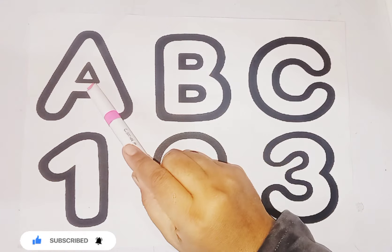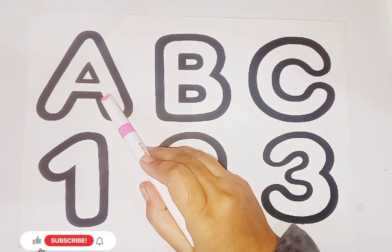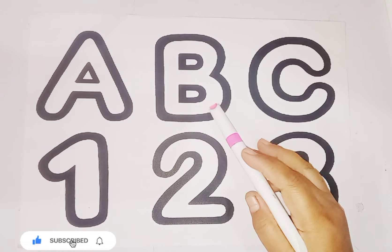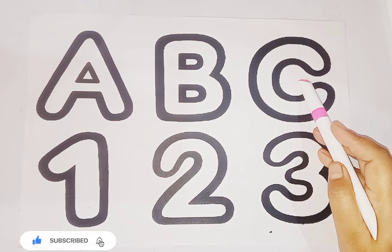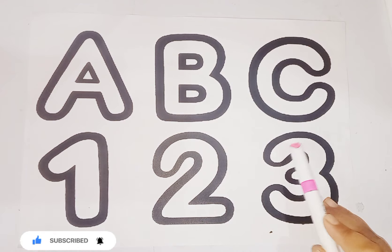Let's learn alphabet and numbers. This is letter A, A for apple, B, B is for ball, C, C is for cat, 1, 2, 3.